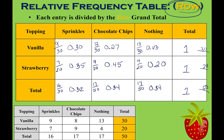So 0.3 plus 0.27 plus 0.43 gives you 1 whole. On the bottom, 0.32 plus 0.34 plus 0.34 gives you 1.